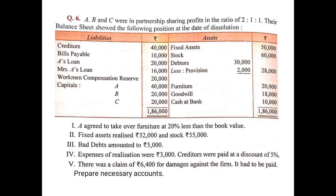The question I am discussing here is practical question number six from your book. It says A, B and C were in partnership sharing profits in the ratio of 2:1:1. Their balance sheet showed the following position at the date of dissolution.